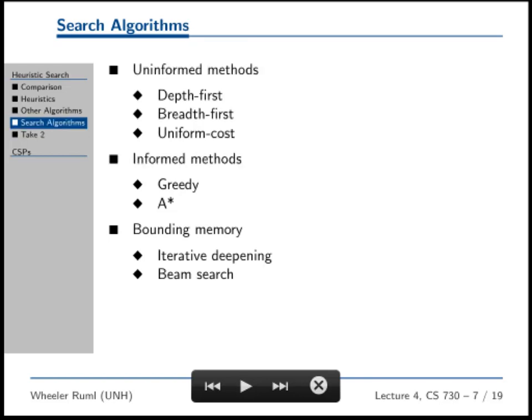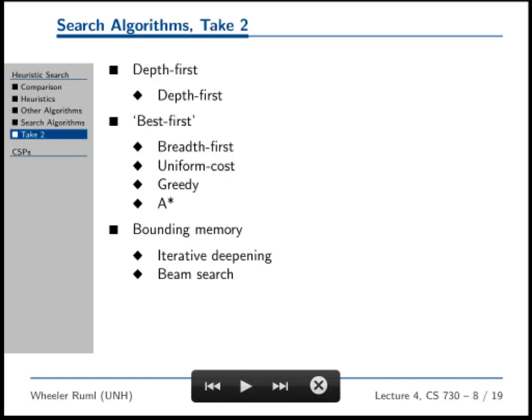This is actually not how I think of the world. This is sort of how we went through things. We did the uninformed searches and then the informed searches and then the memory bounded searches. I actually think about it this very slightly different way where there's depth first search and then they're the best first searches. Because breadth first and uniform cost search, they're uninformed, but it's basically the exact same implementation as A star. You just don't add in the heuristic. You just have a different sorting function. So I think of these all together as a best first search. Whatever way you want to think about it, but that's the way I do it.